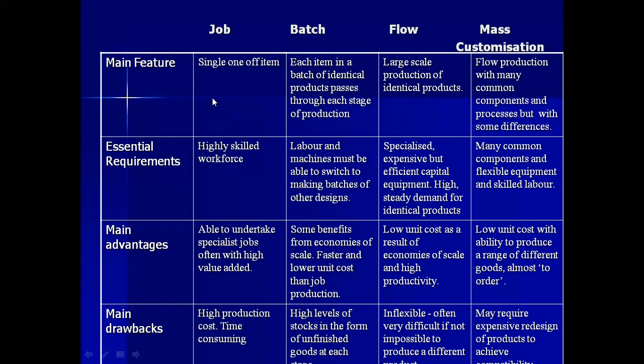We will be reading the table vertically, starting with the main features of job production. It's written 'single one item,' meaning items are produced one at a time to meet the requirements of customers. Items exactly meet the needs of individual people, so you produce according to customer demand — one item at a time, because all items are different from one another.